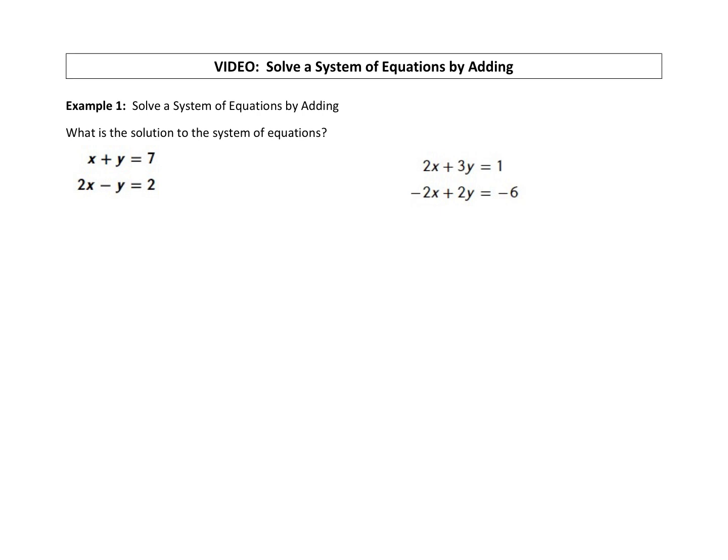So elimination, we add the equations together when the coefficients of your variables are opposites. So what I mean by that is if you have let's say a 5x, I need the other one to be a negative 5x. Those are opposites. The coefficients are the same number with opposite signs. If I have a negative 3y, I need the other y to have a positive 3 with the y. So those are examples of what I mean by opposites.